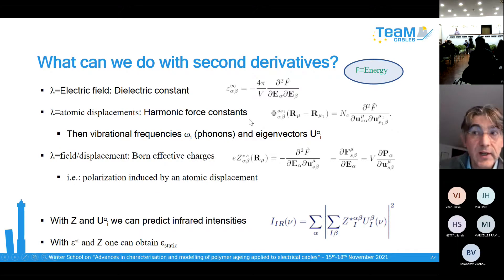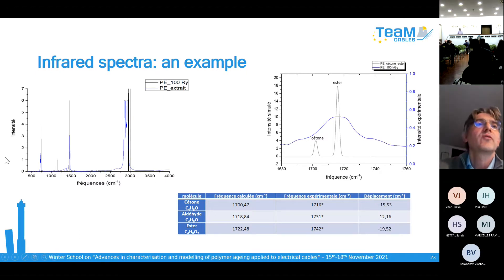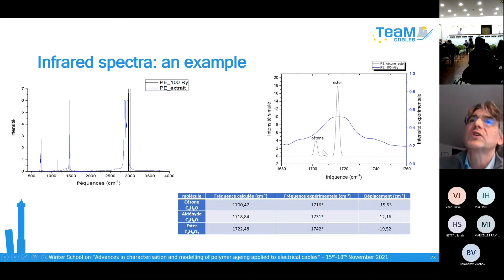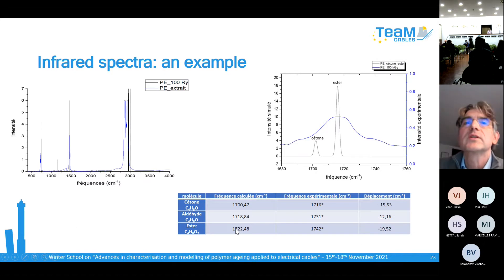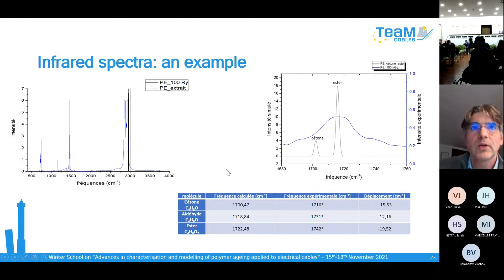With phonon frequencies and Born effective charges we can predict infrared intensities. Here are examples for polyethylene alone and for polyethylene containing two defects — a ketone and an ester — showing some shift in frequencies. The shifts are quite similar for different defects, but the calculations can provide interesting information.